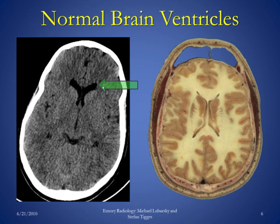On this next image, we can see the frontal horns of the lateral ventricles. On the CT scan image on the left, we again see the third ventricle, and more posteriorly, the quadrigeminal plate cistern. Lateral to the quadrigeminal plate cistern, we can see the temporal horns of the lateral ventricles. The same anatomy is seen on the anatomic image, where the lateral ventricles and frontal horns are outlined.